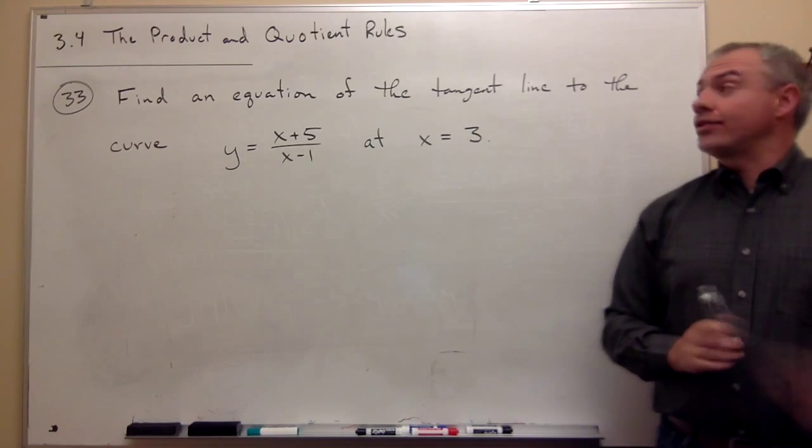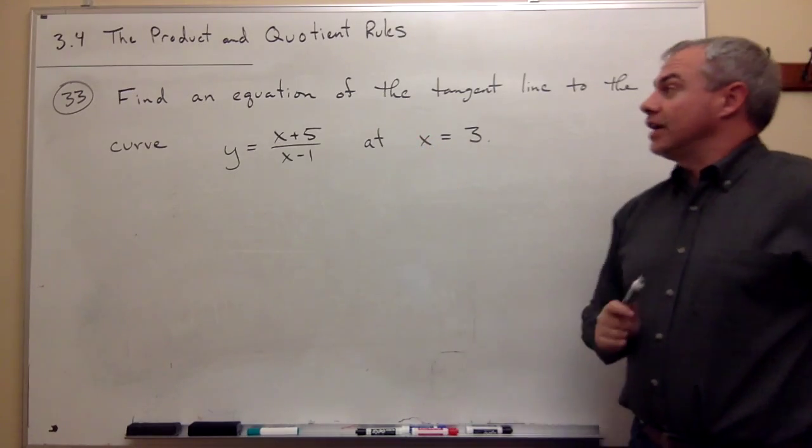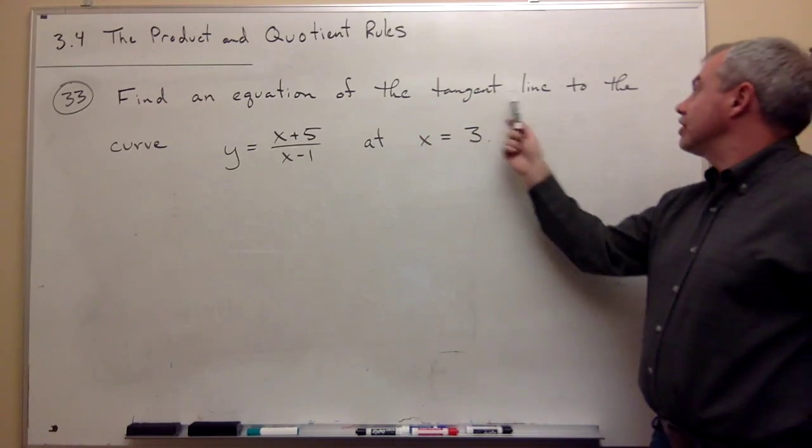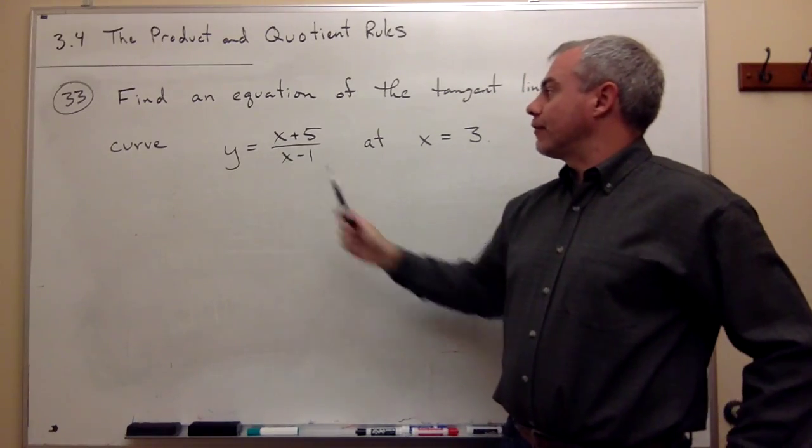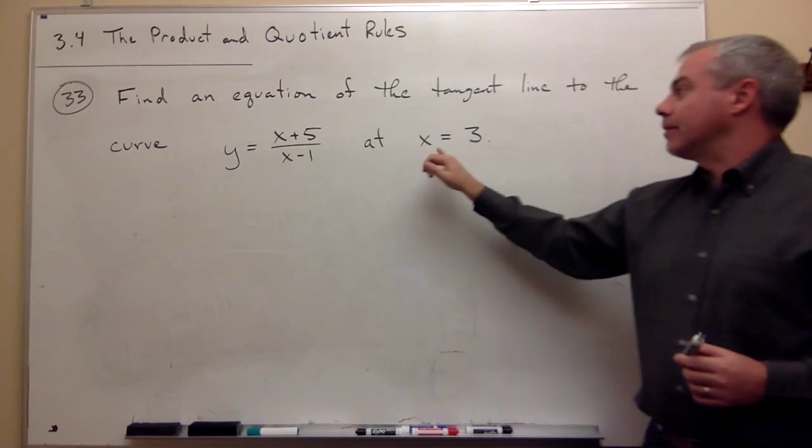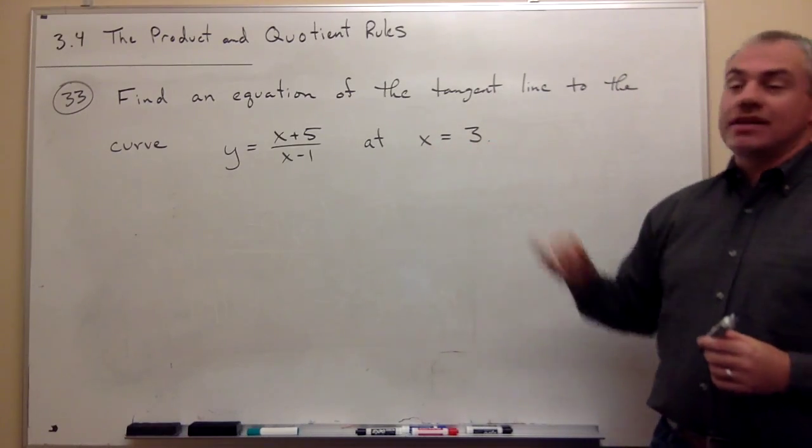In problem number 33, we would like to find an equation of the tangent line to the curve y equals x plus 5 over x minus 1, at the point where x is equal to 3.